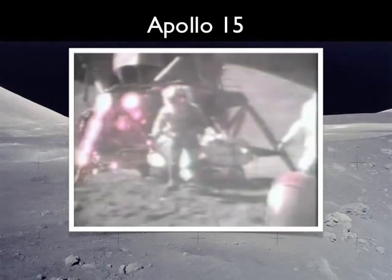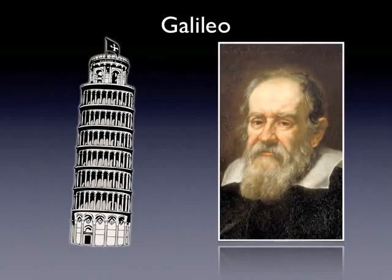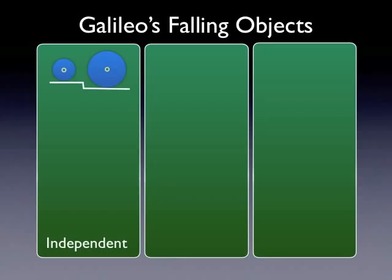That was an actual experiment, but it brings up the topic of Galileo. A lot of people know the story of Galileo dropping weights of different sizes off the Tower of Pisa to judge whether objects of different weights would fall at the same speed. This is likely to be apocryphal — it likely never actually occurred. In fact, Galileo used a thought experiment to determine that objects of different weights fall at the same speed, and you can see his thought experiment here.